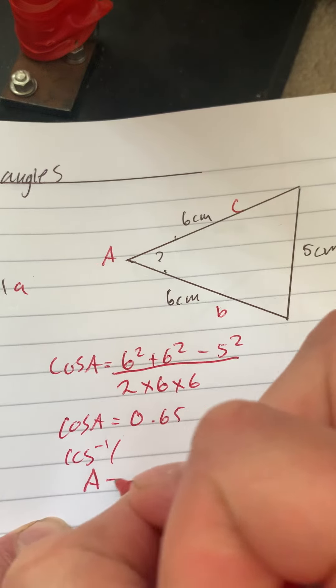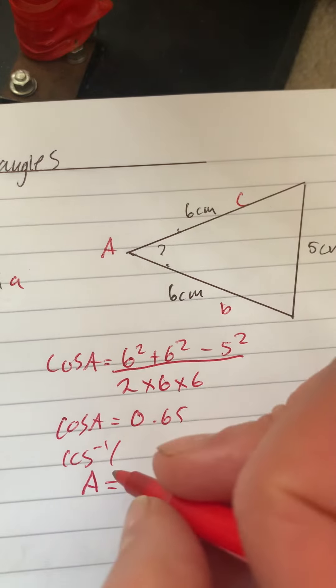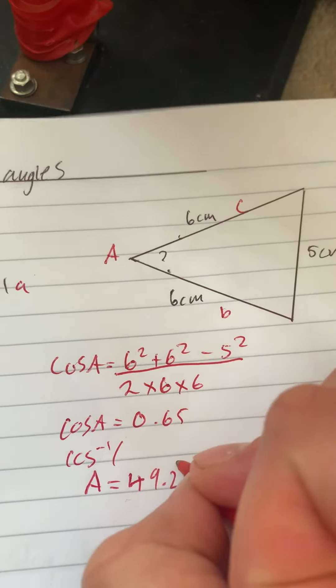So A is going to be, remember you can store it in your calculator, it stores it into your answers on your calculator. We've got 49.2, and that's going to be degrees.